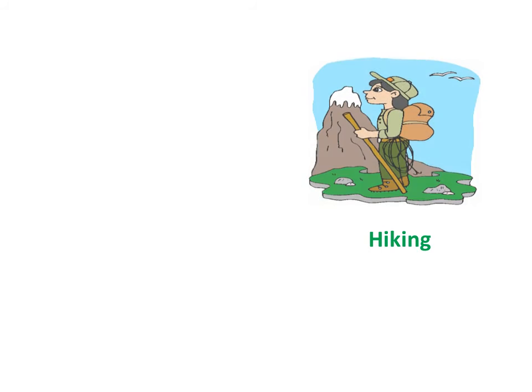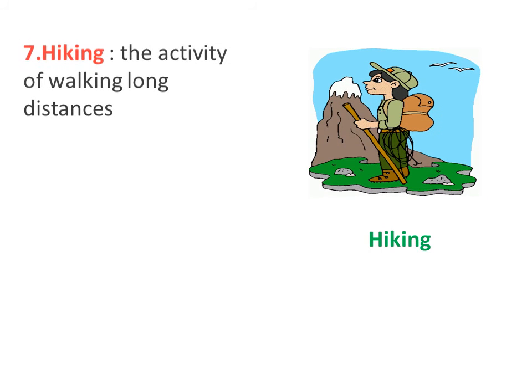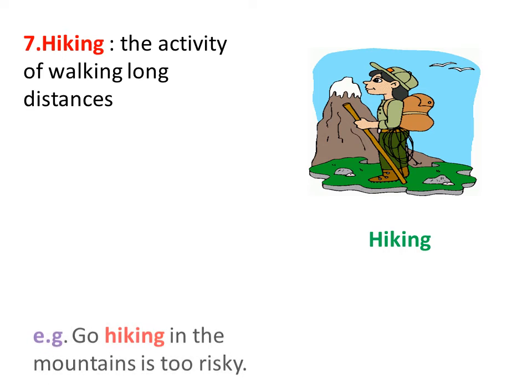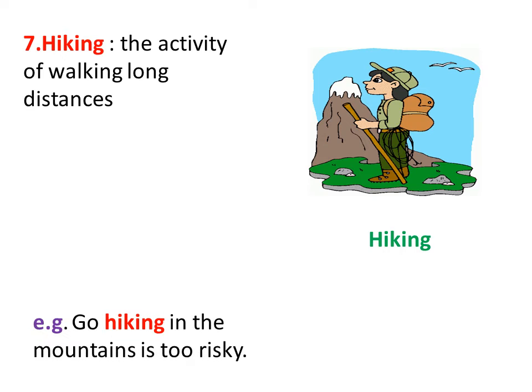Number 7: Hiking. Hiking is the activity of walking long distances. For example, going hiking in the mountains is too risky. So hiking is the activity of walking long distances.